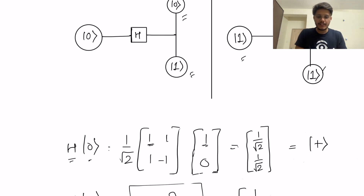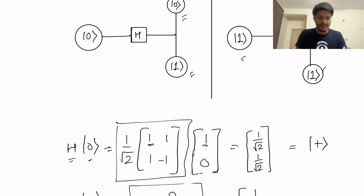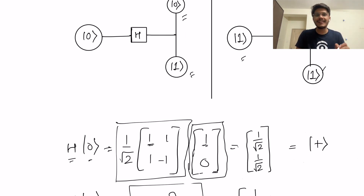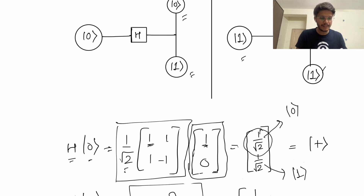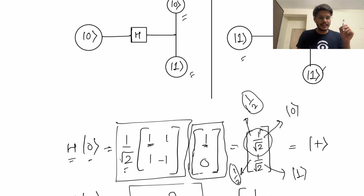Let's see this mathematically. When you apply the Hadamard gate on the |0⟩ state: this is the Hadamard matrix, and this is the |0⟩ state column vector. The first element of |0⟩ (which is 1) multiplies through, giving 1/√2, and the second element (0) cancels the minus term, also giving 1/√2. So you get 1/√2 for the first component representing state |0⟩, and 1/√2 for the second component representing state |1⟩. The probabilities are the squares of these amplitudes: (1/√2)² = 1/2. That means this superposition state is 50% in state |0⟩ and 50% in state |1⟩.